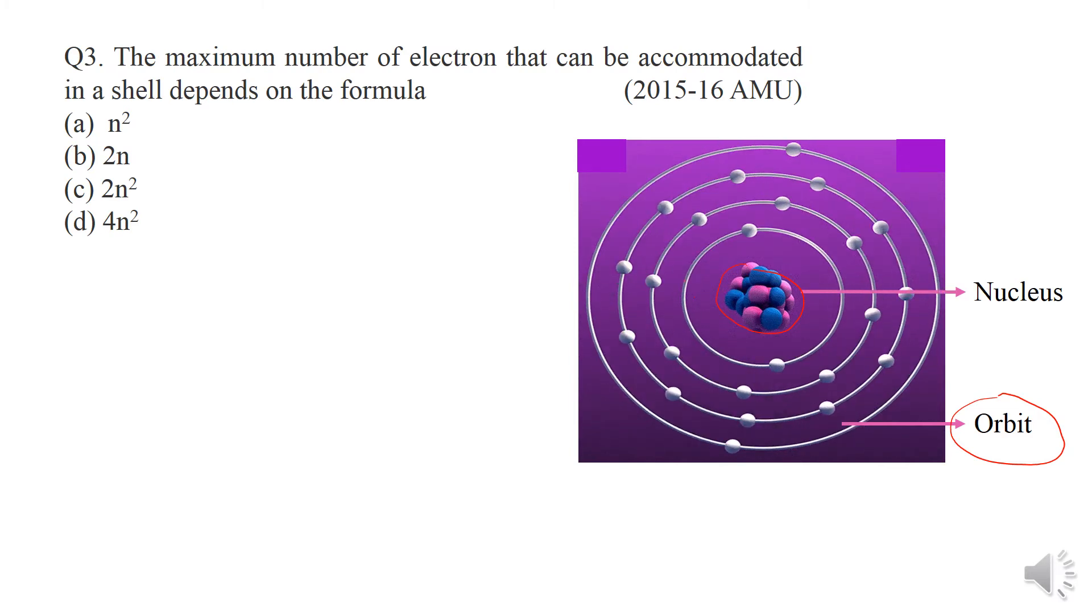And we call these orbits or energy levels. These electrons rotating in energy levels have fixed energy, and we can number these energy levels like 1, 2, 3, 4, or we can mark them alphabetically as K, L, M, N.